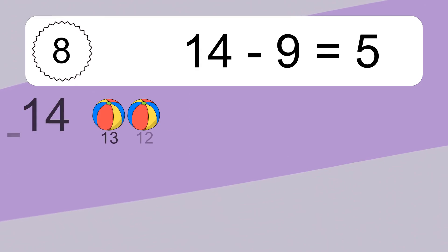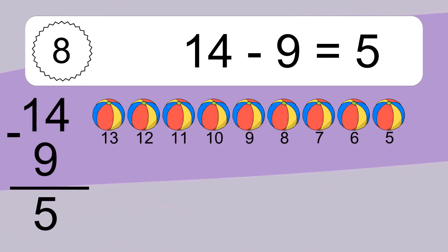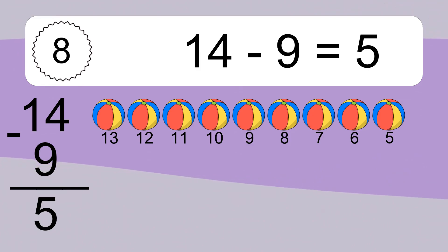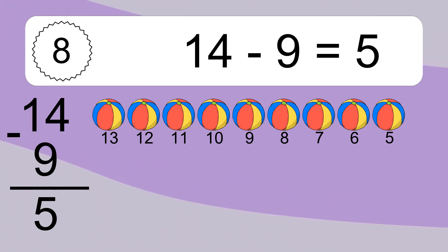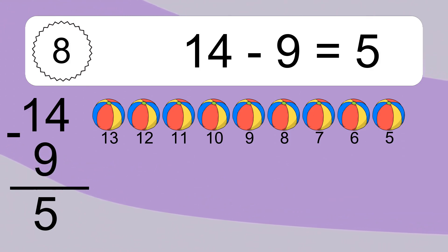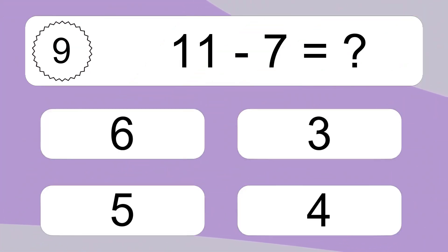14 minus 9 equals 5. Let's count it. 13, 12, 11, 10, 9, 8, 7, 6, 5. 11 minus 7 equals what?